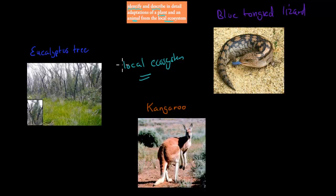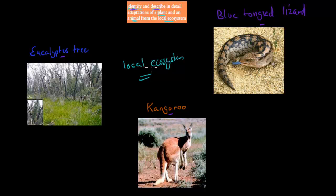The task says identify, which means we have to name the adaptation, and also describe, which means we have to give quite a bit of detail as well. After we've named them, we describe them. So we have to describe the eucalyptus tree, the kangaroo and the blue-tongued lizard. But make sure any adaptations or animals that come up in class, make sure to remember them as well — they're really important.